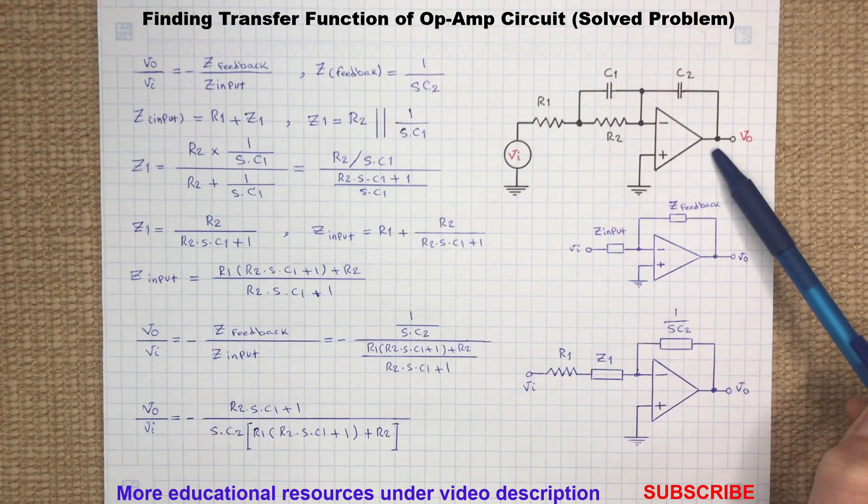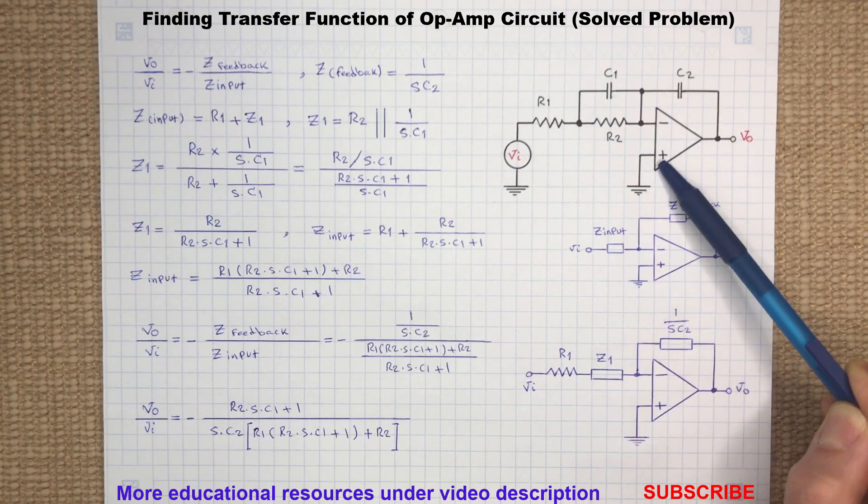And the feedback circuit is from the output to the inverting terminal through the C2. Also, the non-inverting terminal of the op-amp is grounded.